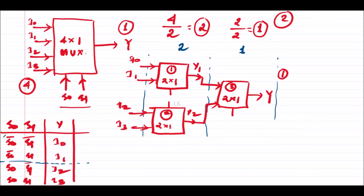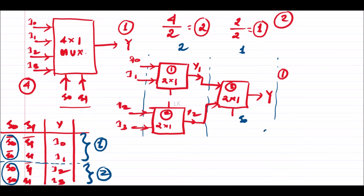When selection line S0 is low, the first multiplexer is activated and its output is seen. When S0 is high, the second multiplexer is activated. So S0 is assigned to the third-stage multiplexer to control which first-stage output passes through. For the first-stage multiplexers, when S1 is low I0 and I2 are seen at their respective outputs, so S1 is shorted and assigned to both first-stage multiplexers.